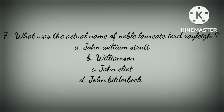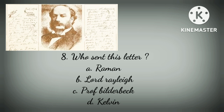Question 7: What was the actual name of Nobel laureate Lord Rayleigh? Option A: John William Strutt, Option B: Williamson, Option C: John Eliot, Option D: John Bilderbeck. The correct option is Option A — John William Strutt.